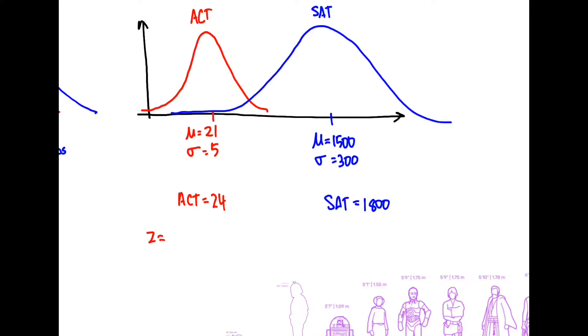So here we got z equals x minus mu over sigma which means 24 minus 21, 24 minus 21 over 5 equals 3 over 5. That's the same as 6 tenths or 0.6. Let's do the same with the SAT score. So z equals x minus mu over sigma. And we know this person got an 1,800. The mean is 1,500. And sigma is 300. So that equals 300 over 300 or 1.